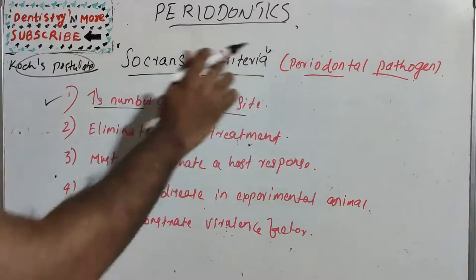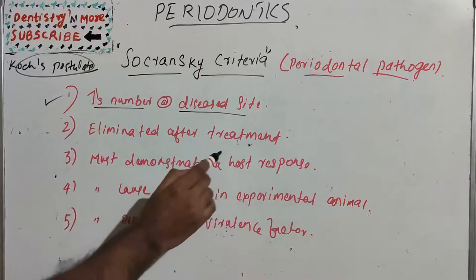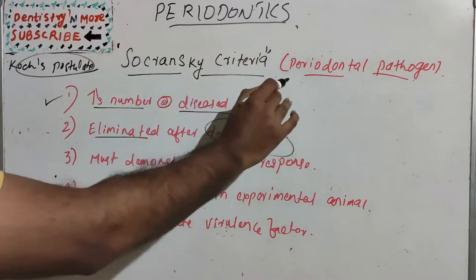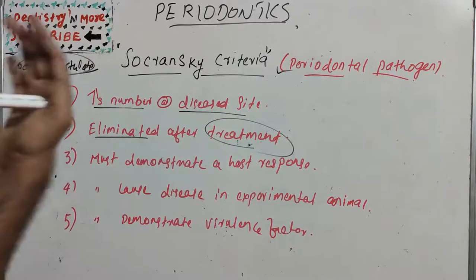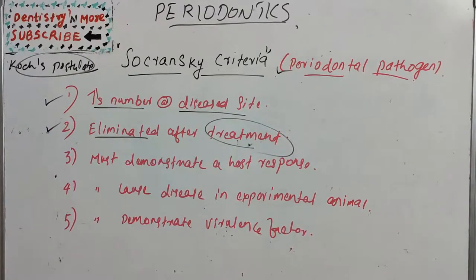The second criterion is that the organism should be eliminated or decreased at sites that demonstrate clinical resolution of disease with treatment. If we are treating the disease and the organism is getting eliminated or reduced in count after treatment, we can say that particular group is a periodontal pathogen, because it is affected by the treatment modalities.